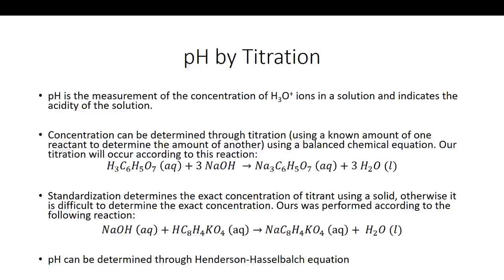To do this, we needed to standardize our NaOH. It's important to standardize NaOH because we need to know the exact concentration. It's generally hard to know the exact concentration of a sodium hydroxide solution made from another stock solution using beakers and graduated cylinders, because we can't measure perfectly. So we reacted it with a solid acid — KHP — which reacts in a 1-to-1 mole ratio with NaOH. By doing this, we determined the exact concentration of our NaOH, which then allowed us to determine the concentration of our citric acid. Once we found the concentration of citric acid, we determined the pH using the Henderson-Hasselbalch equation.